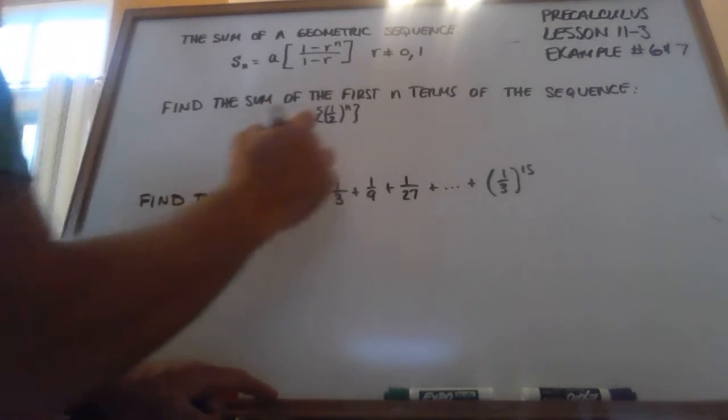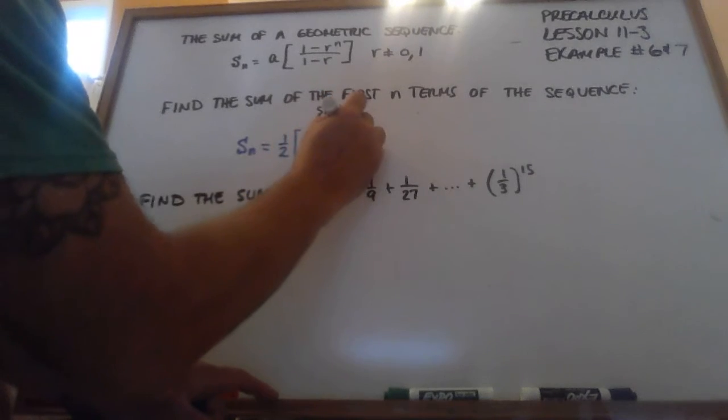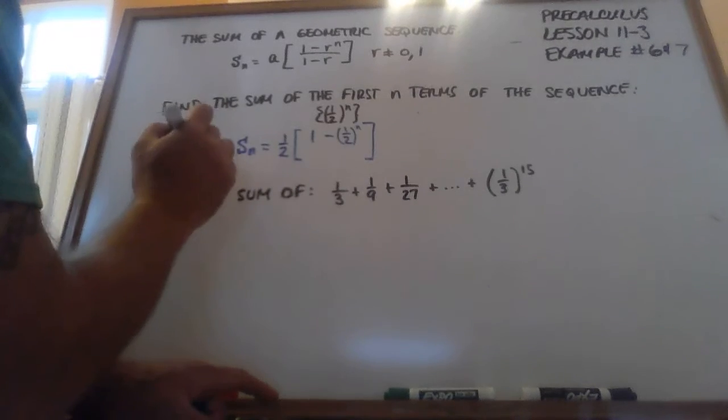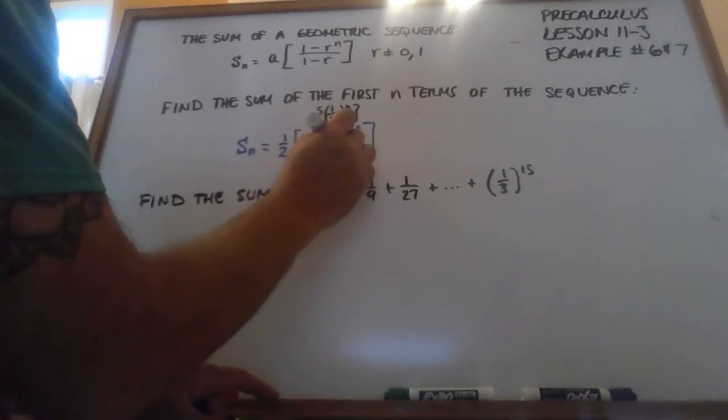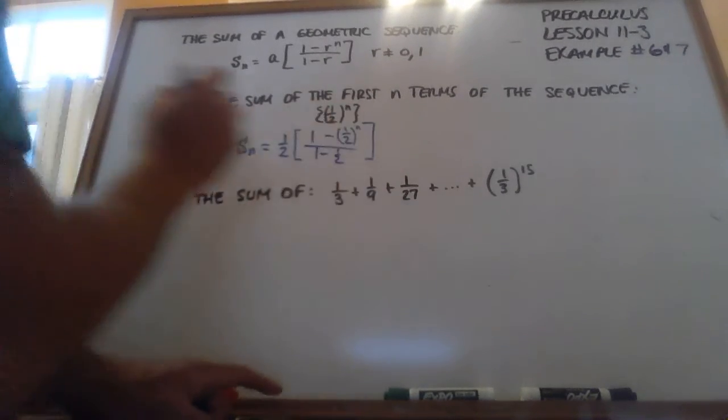So this is going to be 1 minus 1 half to the n power over 1 minus 1 half.